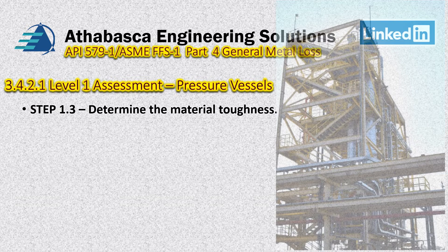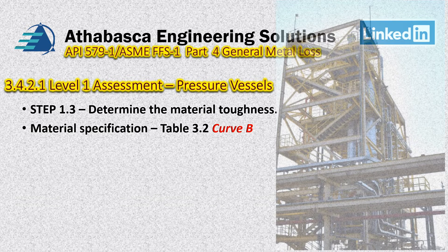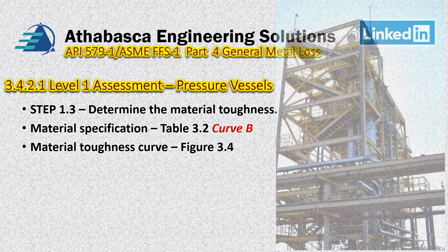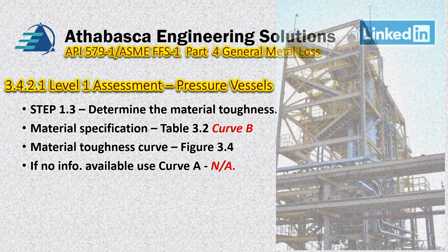Next, material toughness. We use Table 3.2 and we use Curve B. From previous videos, recall there are four basic curves: A, B, C, and D. The material toughness curve check is done using Figure 3.4. If there is no information available, we're supposed to use Curve A.